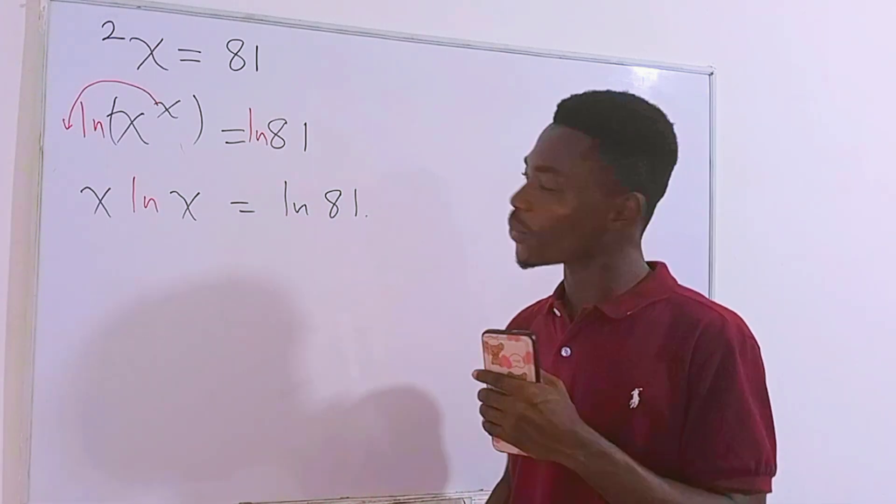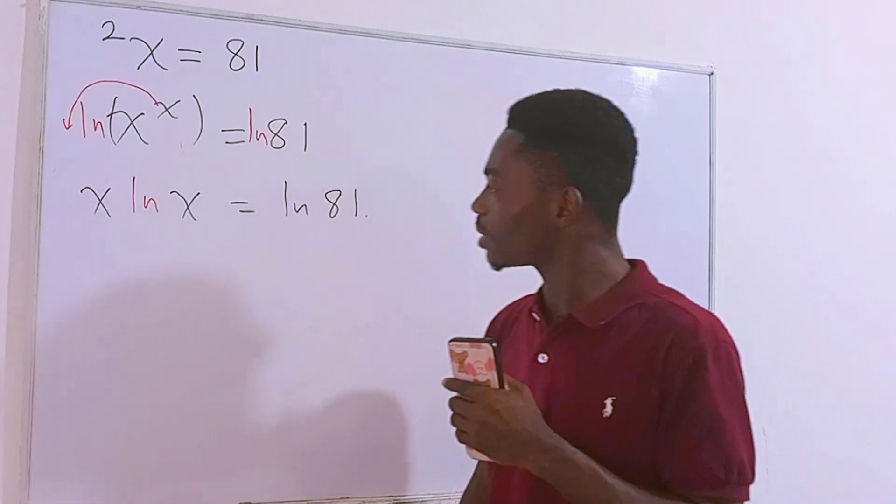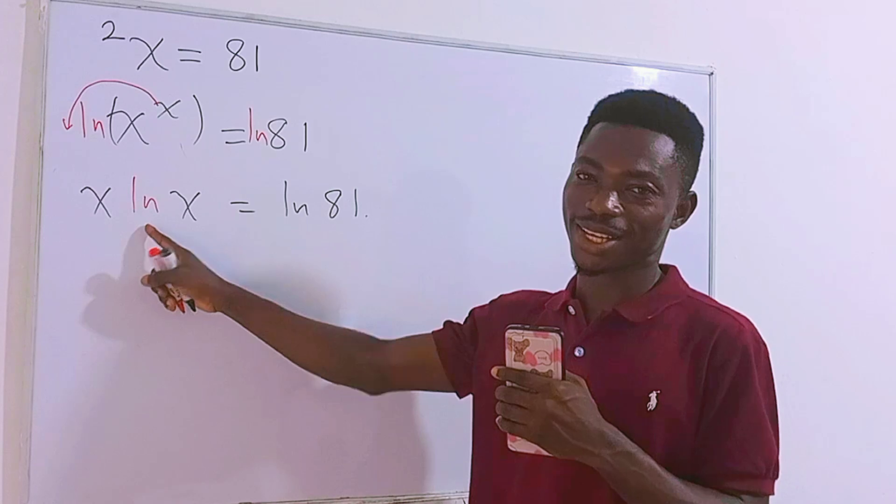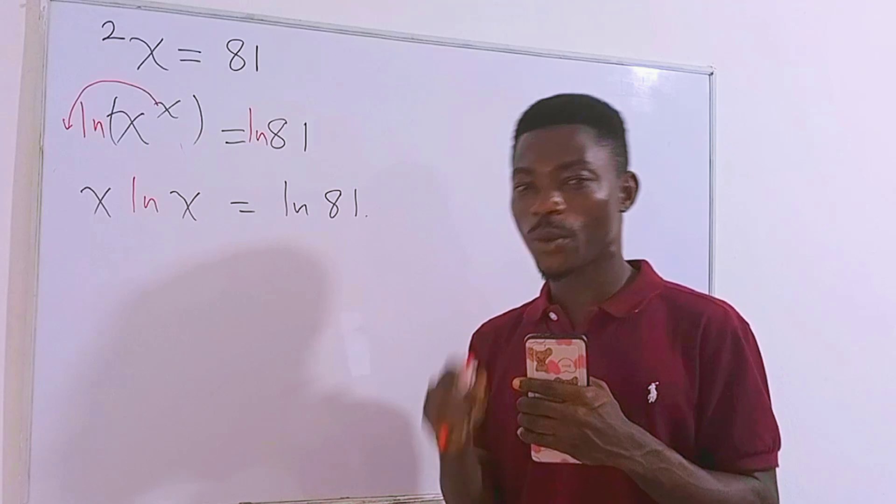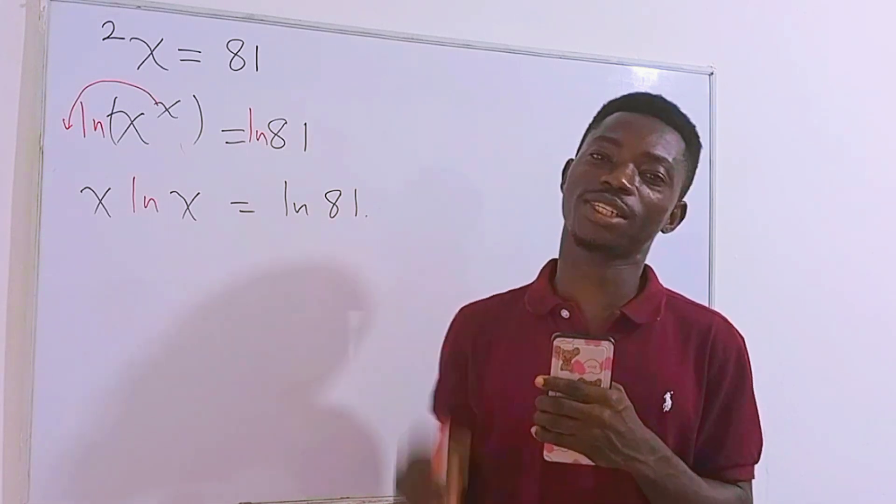And now check this. We are looking for x. All the x's are found on the left hand side of the equation. But still it seems there's a problem. Because of the ln right here there's a problem. It's like we are caged and we need emergency exit. And remember whenever we need an emergency exit you have to be thinking about Lambert W function.